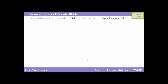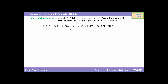Now we will see the chromyl chloride test. When potassium dichromate is heated with concentrated H₂SO₄ and a soluble metal chloride, orange-red vapors of chromyl chloride are evolved. The reaction shows K₂Cr₂O₇ reacting with NaCl, i.e. metal chloride, and concentrated H₂SO₄ to yield KHSO₄, NaHSO₄, and CrO₂Cl₂, i.e. chromyl chloride.